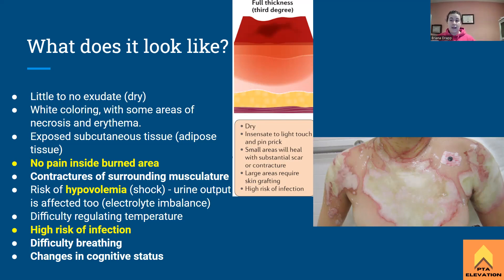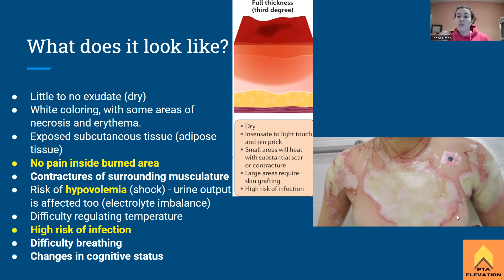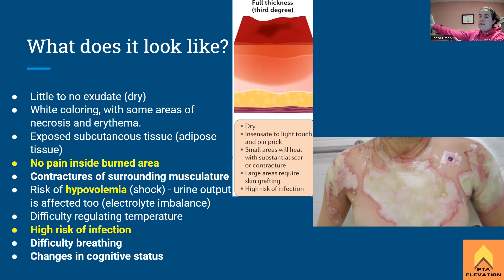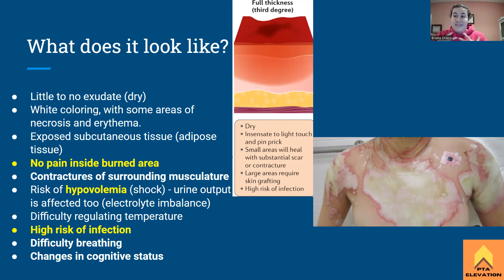Inside the burned area there's going to be no pain because all the nerves are gone. As you get toward the outside of the tissue where it's still somewhat intact, the patient will feel extreme pain. So the burn may be painful in some places and completely painless in others. We'll also see contractures of the surrounding musculature — for example, a burn to the antecubital space can cause an elbow contracture — so we must maintain range of motion in those areas.